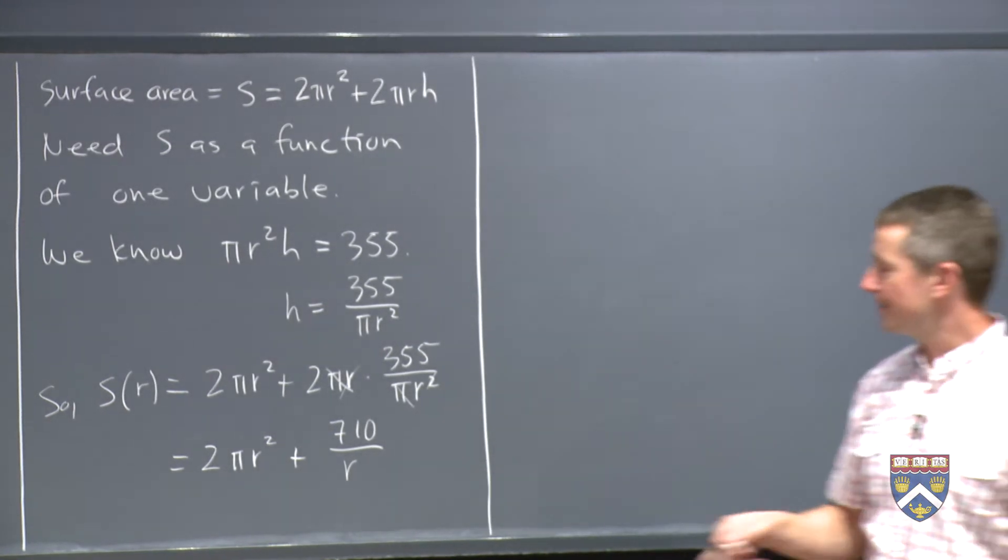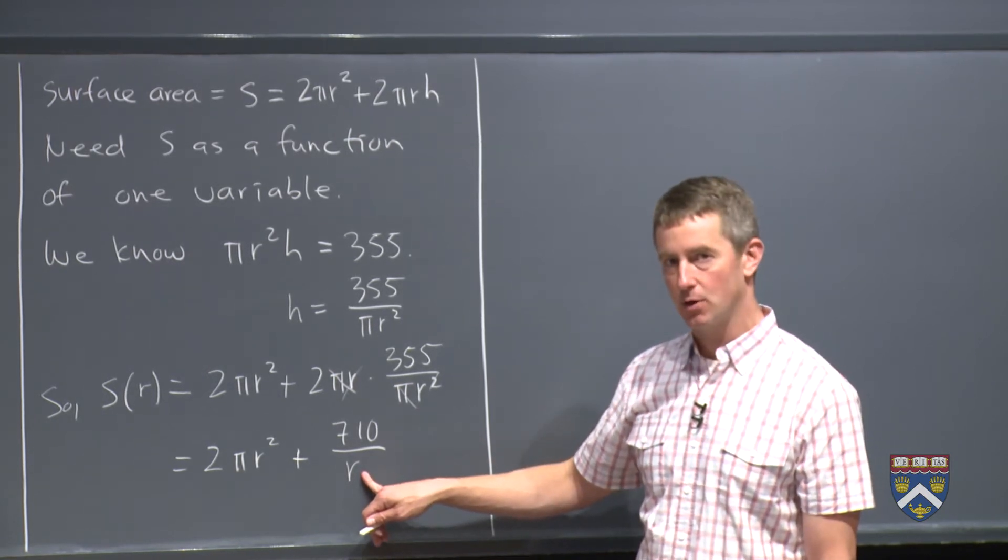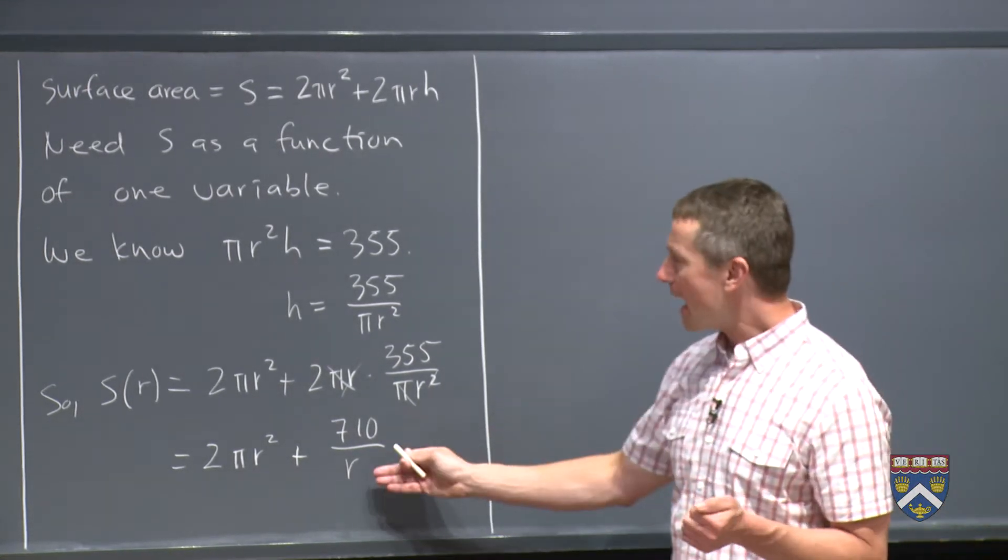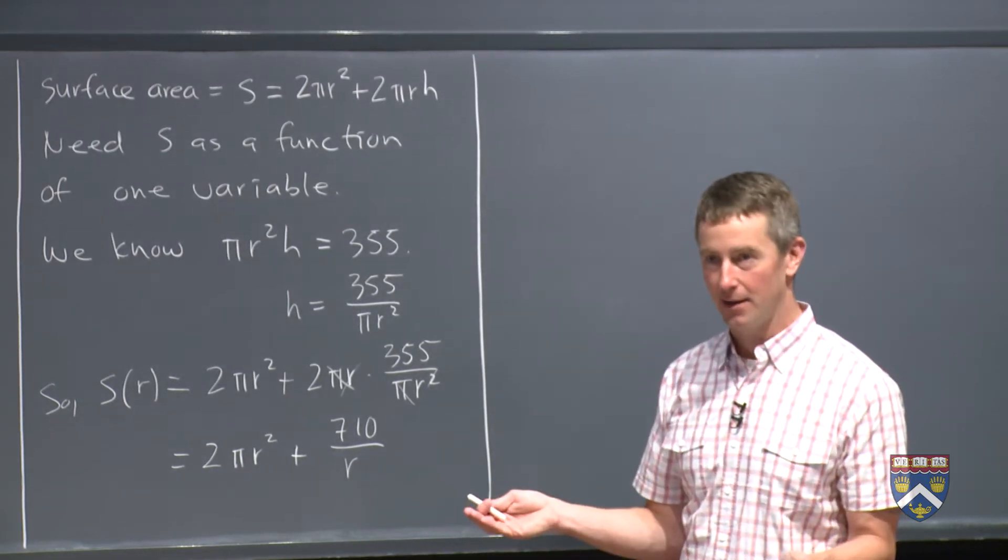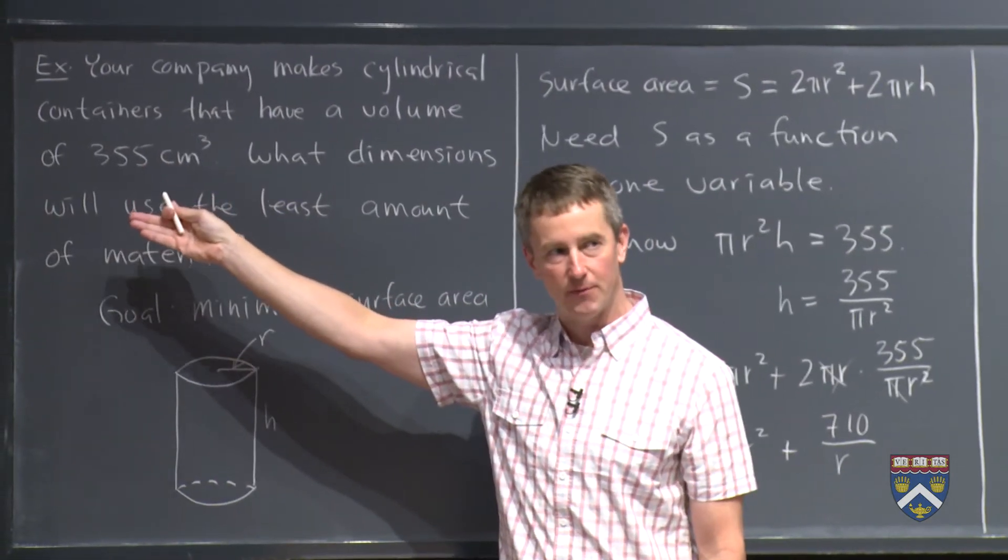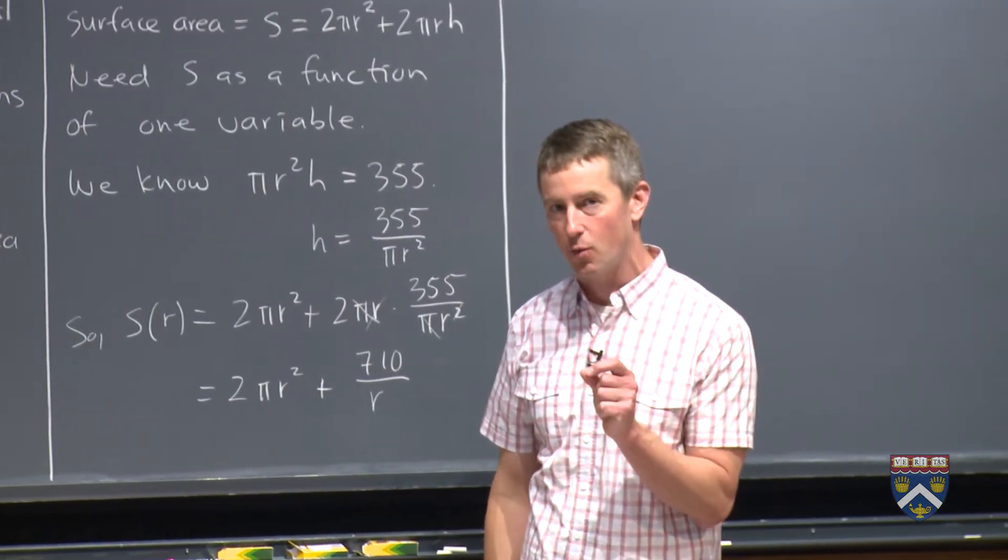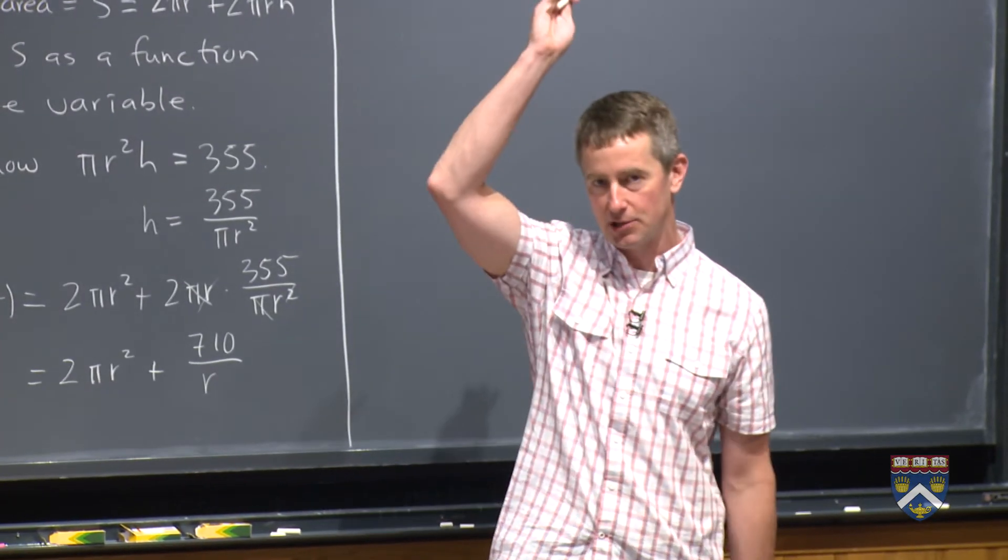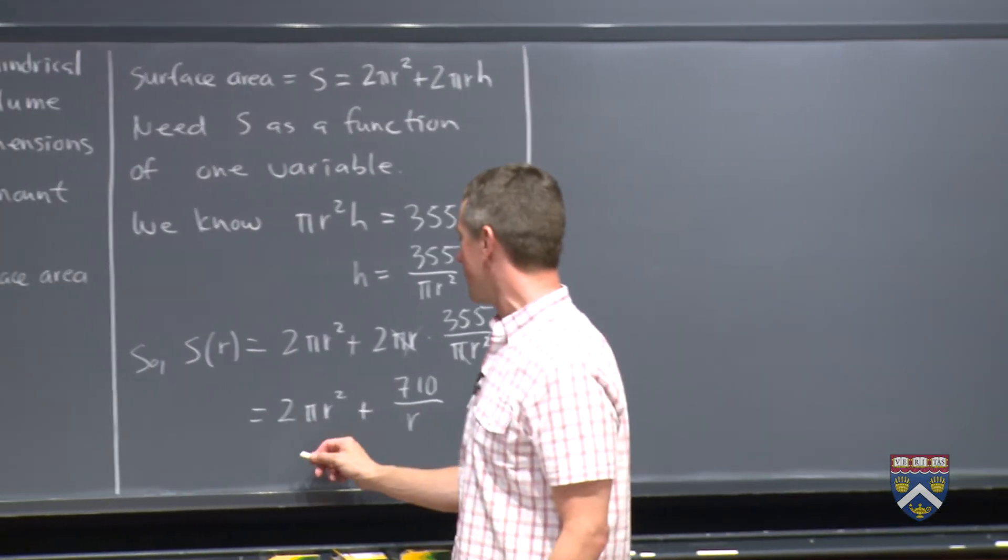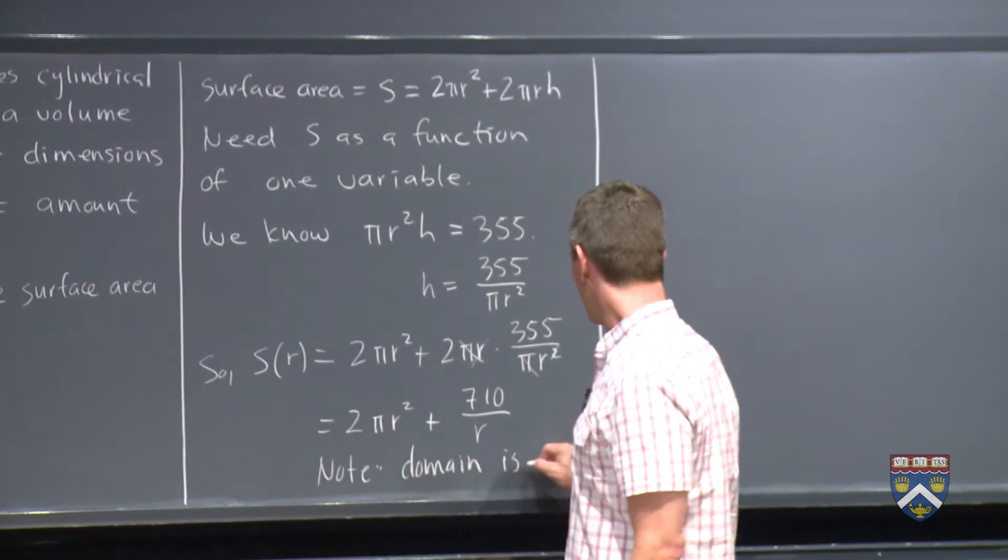So one thing to notice here is that this function itself is already undefined when r is what? When r is 0. Let's think about what r being 0 will mean. I mean, so the fact that s is undefined at 0 means s prime is definitely going to be undefined. If r is 0, that means the radius is 0. That means we have no can. And if we have no can, we're not going to be able to meet this requirement of having a volume of 355. So really the domain of this function is r greater than 0. r could be very, very small, .0001, meaning you're making something very, very narrow and extremely tall, as you can see in the applet, by making r very small. But the domain here is r greater than 0.